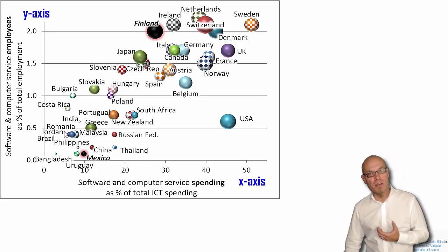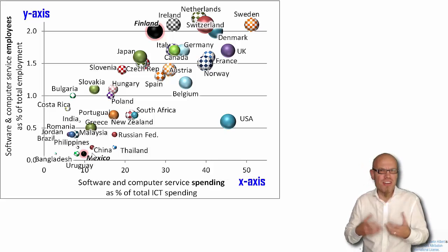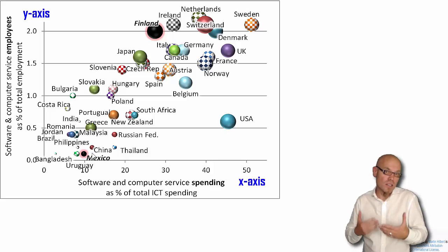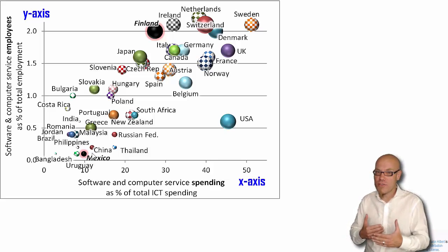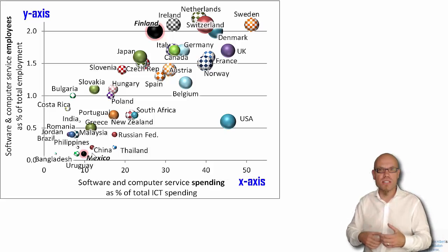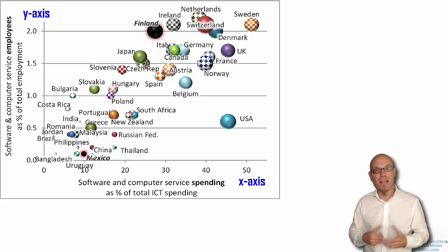Developing countries like Costa Rica spend more on hardware — they have to spend more on hardware — and have less left over to spend on software, because as we saw in the cube, hardware infrastructure comes first. You need first of all the hardware, and then you can see how much you can spend on services, data analysis, software, database development, and so forth.